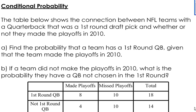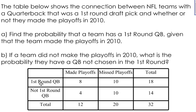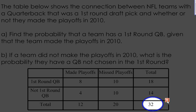Let's go with a conditional probability example. The table below shows the connection between NFL teams with a quarterback that was a first-round draft pick and whether or not they made the playoffs in 2010. You've got teams that made the playoffs, teams that missed the playoffs, and whether or not they had a quarterback chosen in the first round or not. There's a total of 32 teams altogether, so it should all add up.